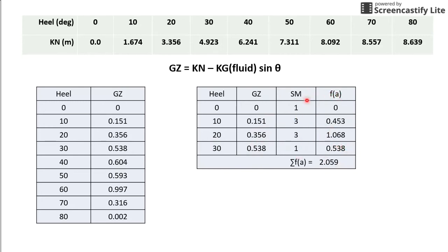So, the Simpson multipliers that I'll be using for this question is 1331. Because it is even number. And you are supposed to find the f(a) which is the product of Simpson multipliers times GZ. And you have to also find the summation of f(a). And in this case it's 2.059.